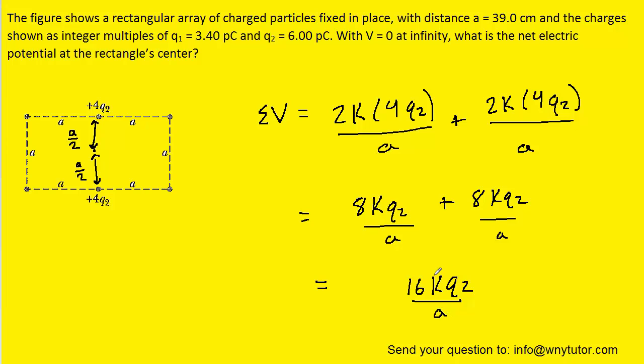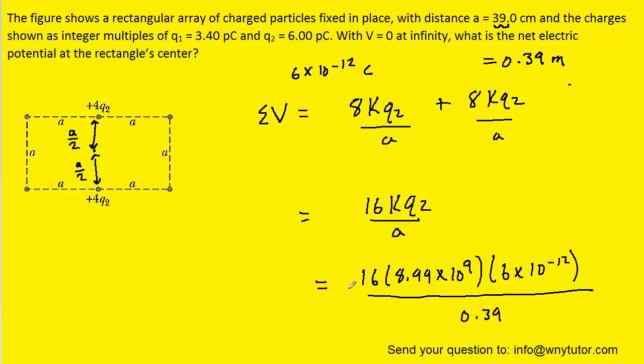We know k is a constant 8.99 times 10 to the ninth. Q2 was given to us in picocoulombs, so we'll have to multiply that by 10 to the minus 12 in order to convert it into coulombs. And then a was given to us in centimeters, so let's just move that decimal over two places to get 0.39 meters. So we'll go ahead and plug in those known values. And when we simplify that, we get roughly 2.21 volts.